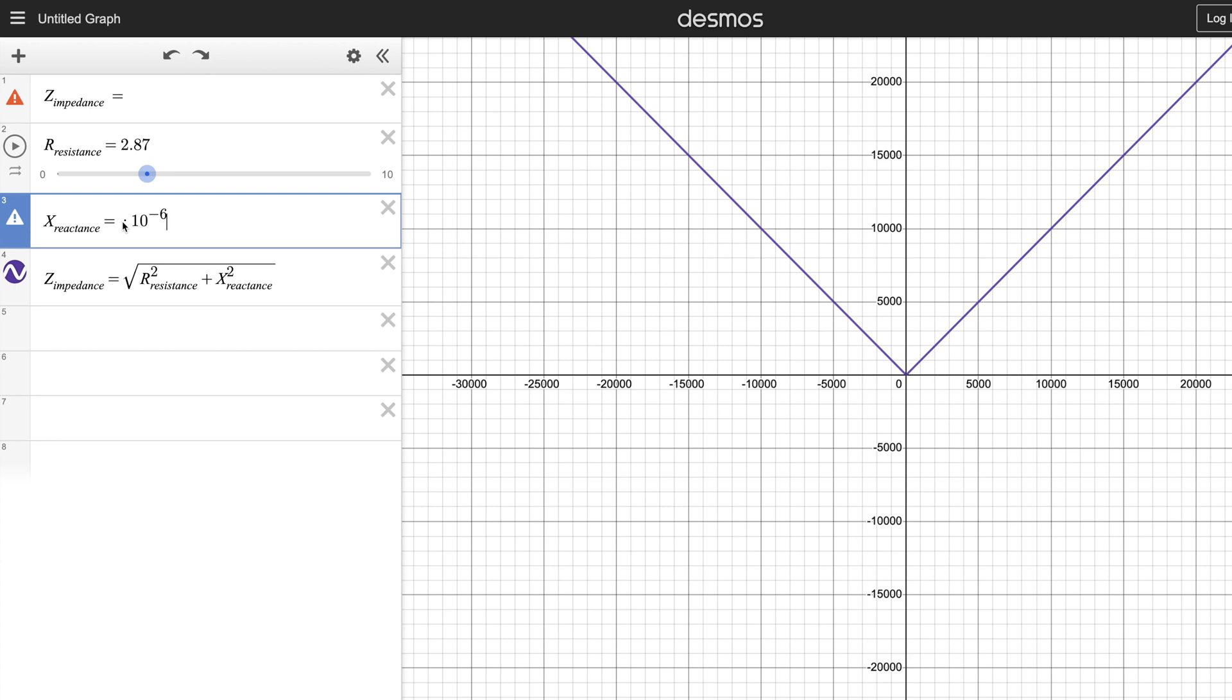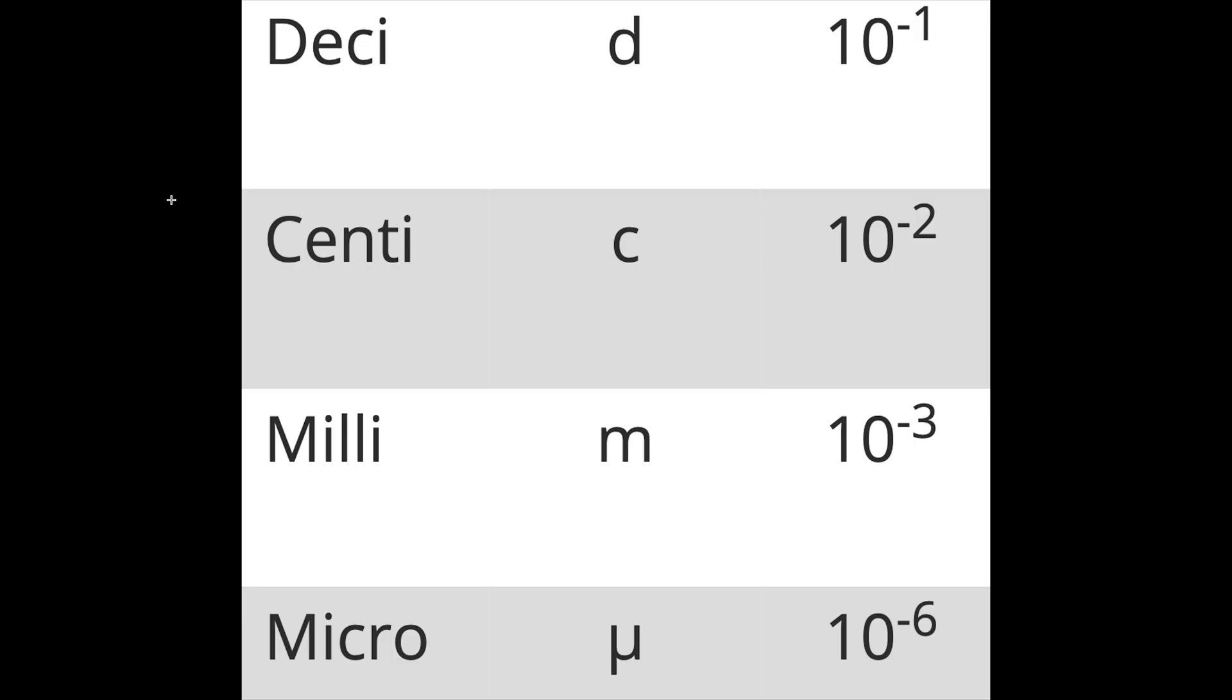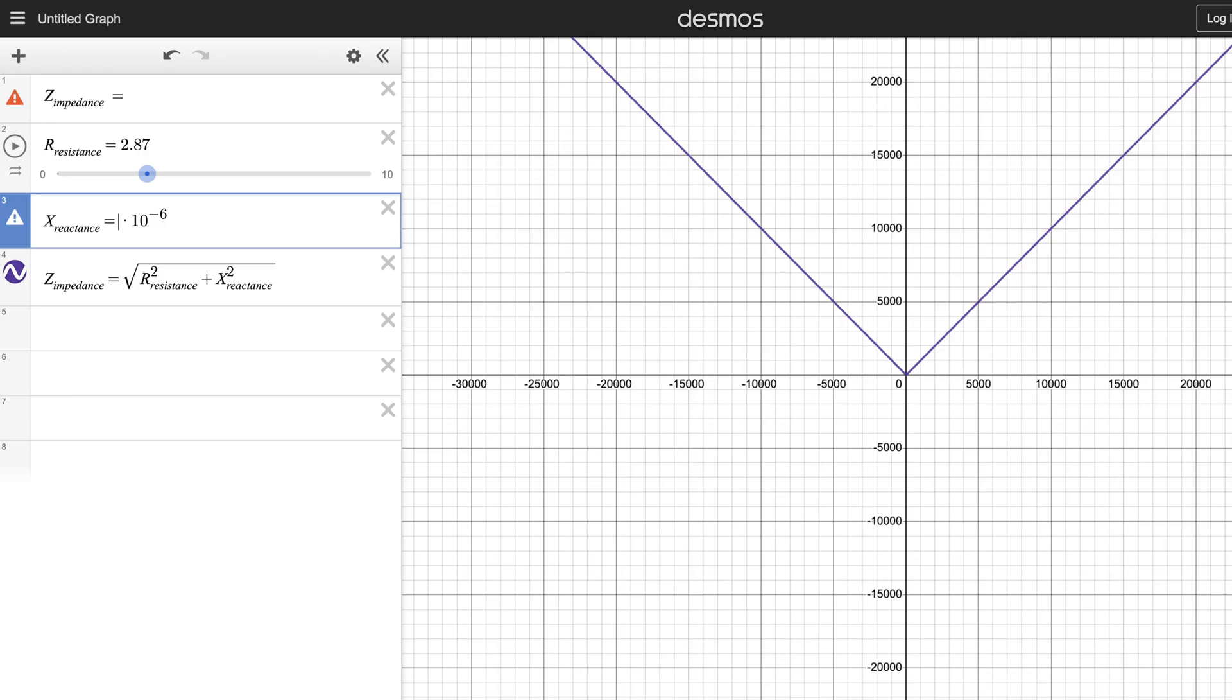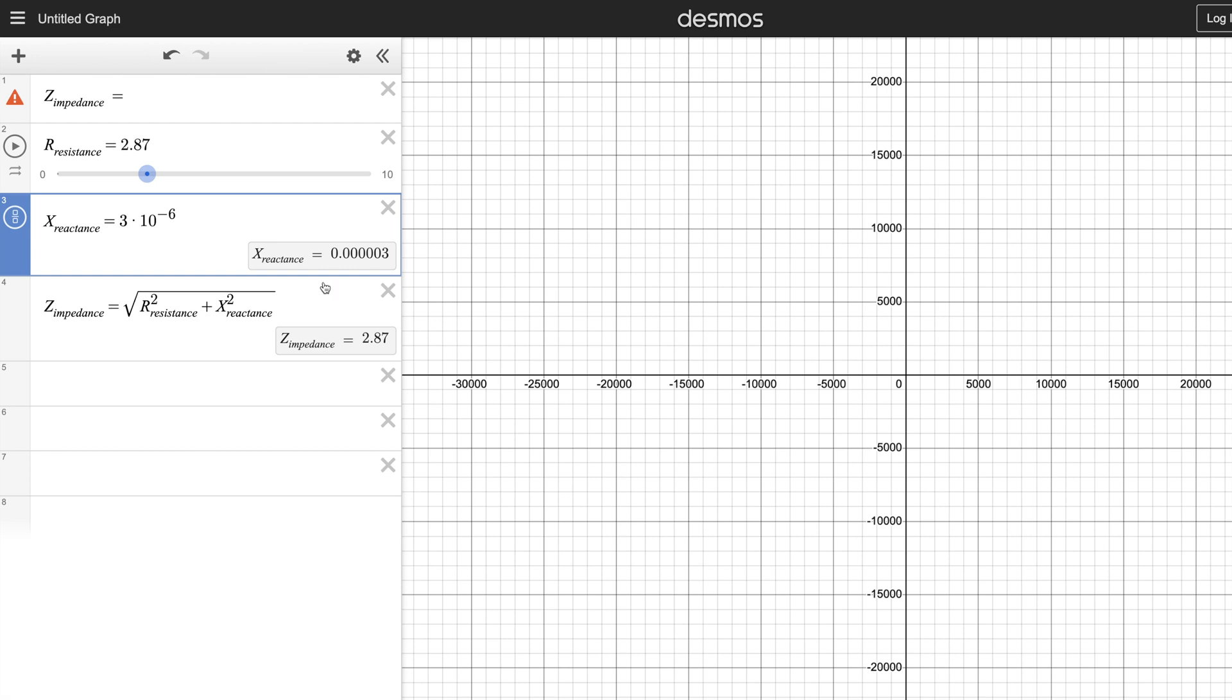the reactance of cables are in the micro-ohms. If you remember from chemistry class, the prefix micro is a factor of 10⁻⁶. When we enter a reactance that is in the micro-ohms, resistance in a cable is equal to the impedance in the audible band.